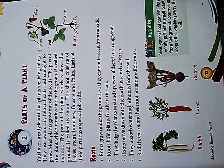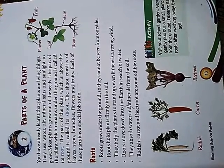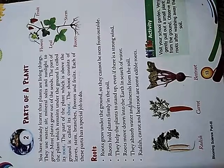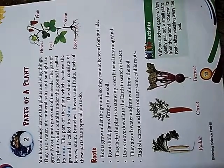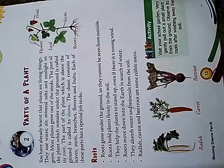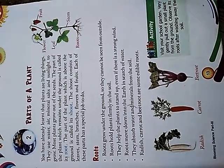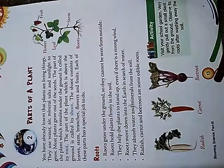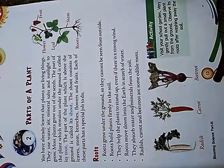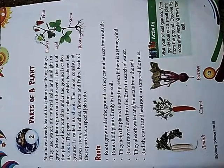Most plants grow out of seeds. The part of the plant which remains under the ground is called its root. The part of the plant which is above the ground is called its shoot. The shoot consists of leaves, stems, branches, flowers and fruits. Each of these parts has a special job to do.